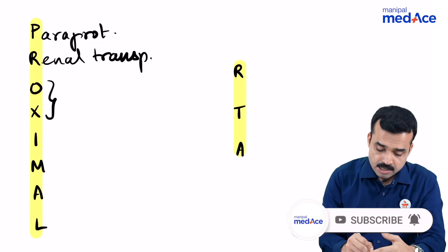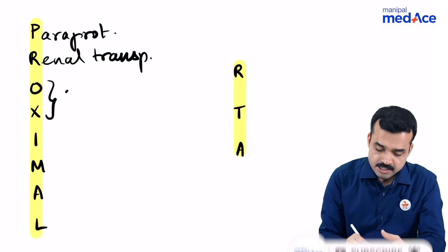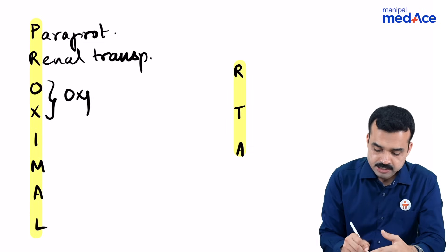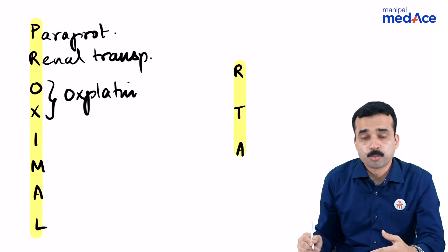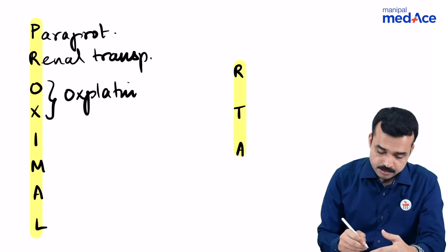OX would stand for oxaliplatin and cisplatin. These drugs cause type 2 proximal RTA.